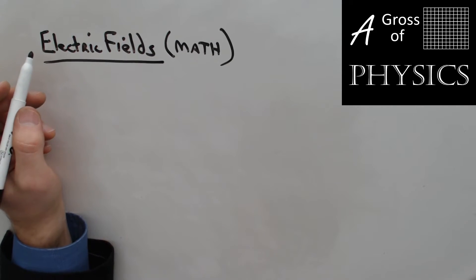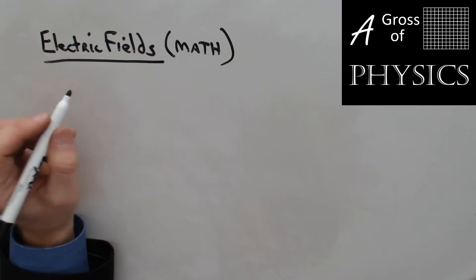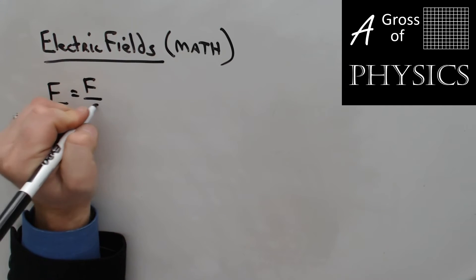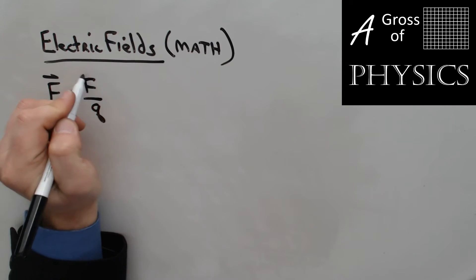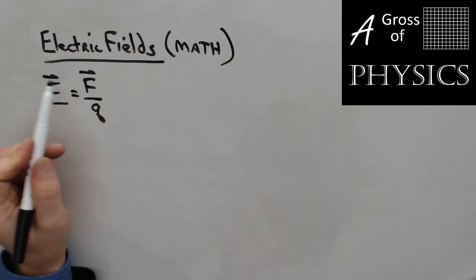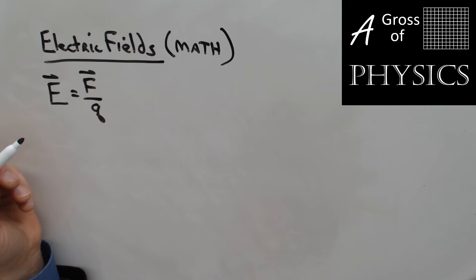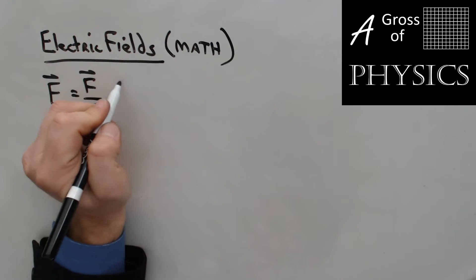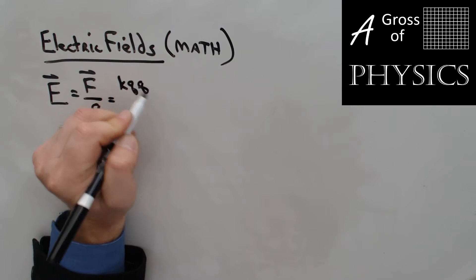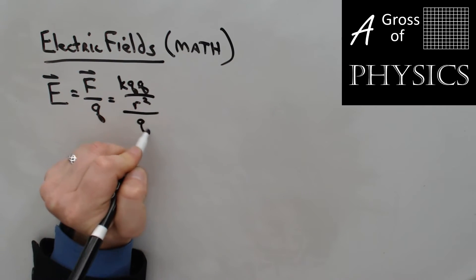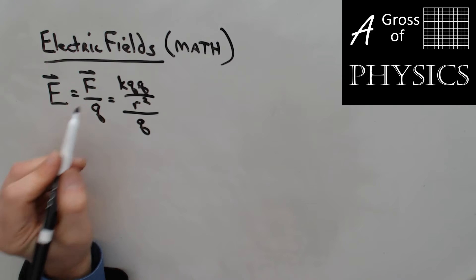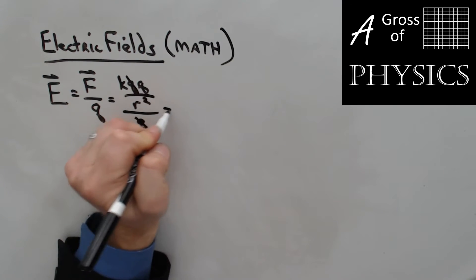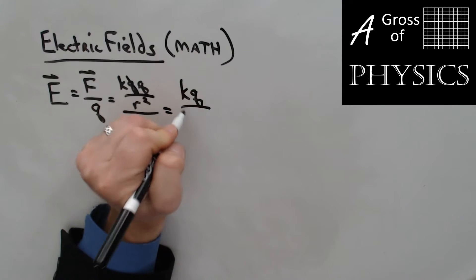The electric field is the region around a charged particle that's going to affect other charges, and our equation is E equals F over Q. We could put vector symbols over the E and the F because it's a vector quantity — direction matters. Our equation for F is KQQ over R squared. If we replace F with that, we end up getting KQQ over R squared over Q. One of the Q's cancels and you're left with KQ over R squared.